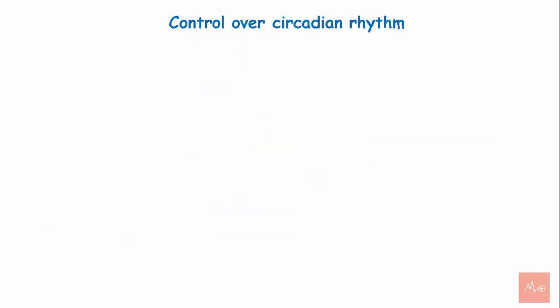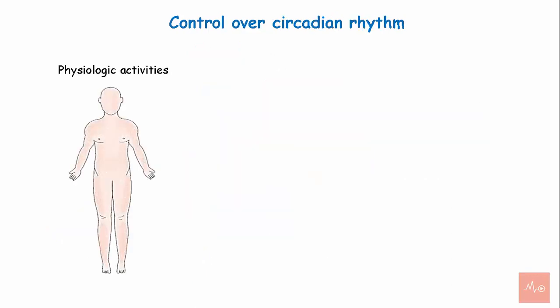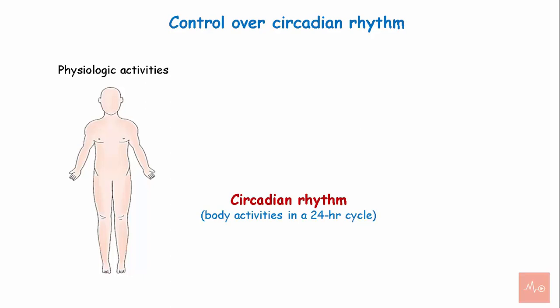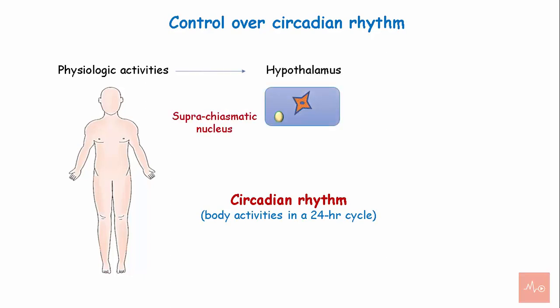Control over the circadian rhythm. The physiologic activities of the body that occur in a 24-hour cycle constitute the circadian rhythm, and are under the control of the hypothalamus. The suprachiasmatic nucleus of the hypothalamus sends signals to different parts of the body to maintain activities like sleep, hunger, thirst, and hormone secretion, which are responsible for maintaining the circadian rhythm.